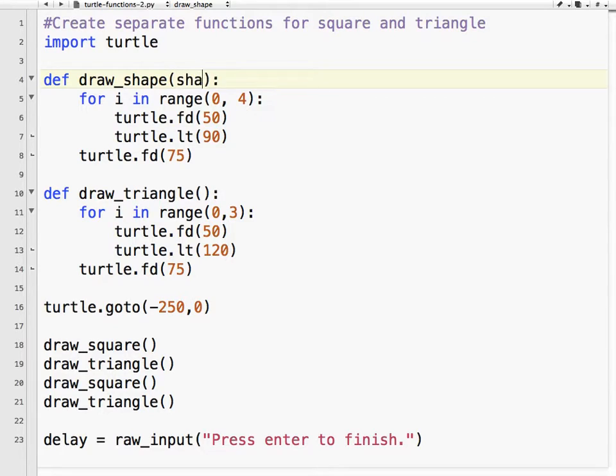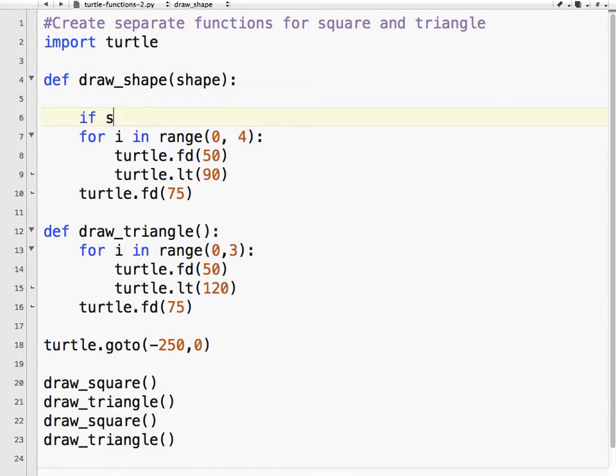And in here, I'm going to use the variable name shape. Okay, this is going to be a string. So what's going to happen is if shape equals square, and I need to indent this,